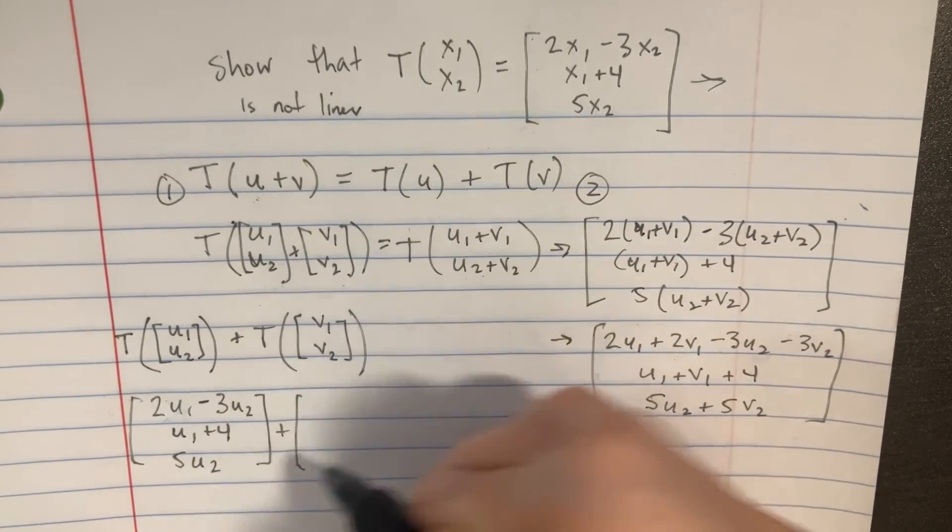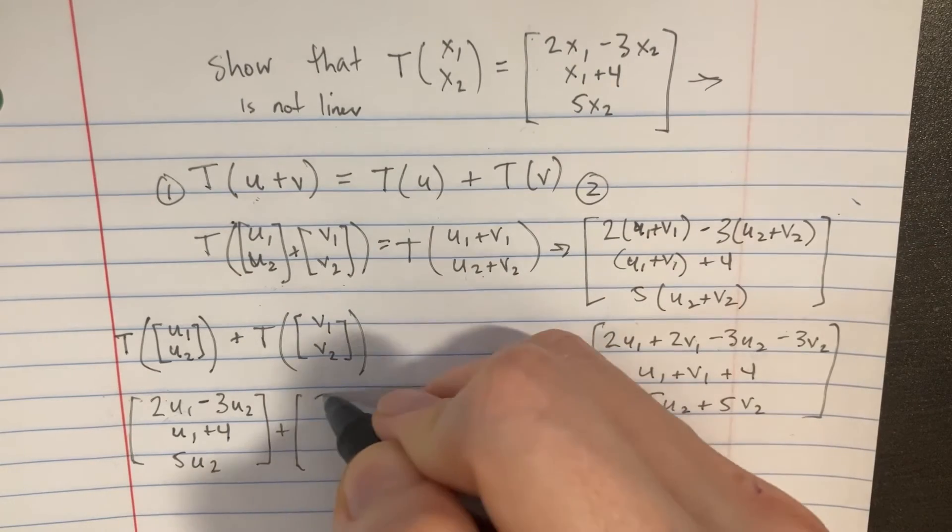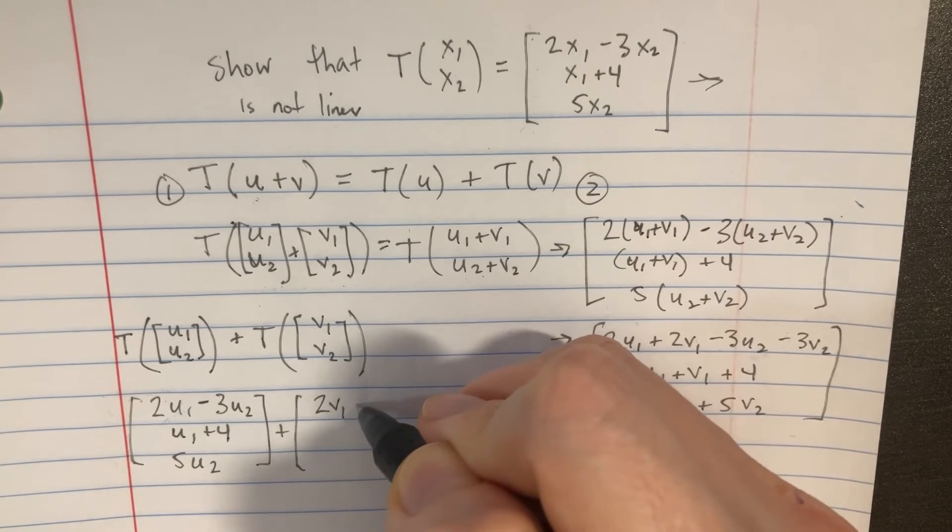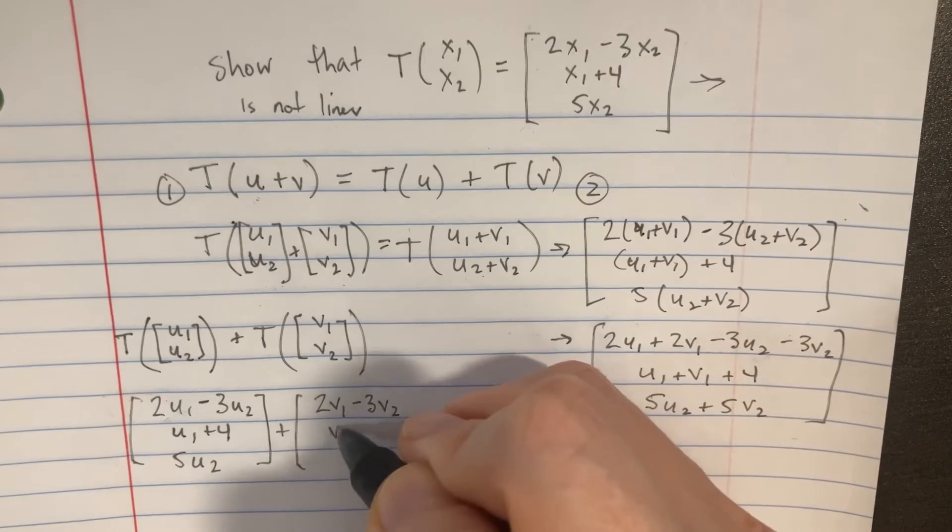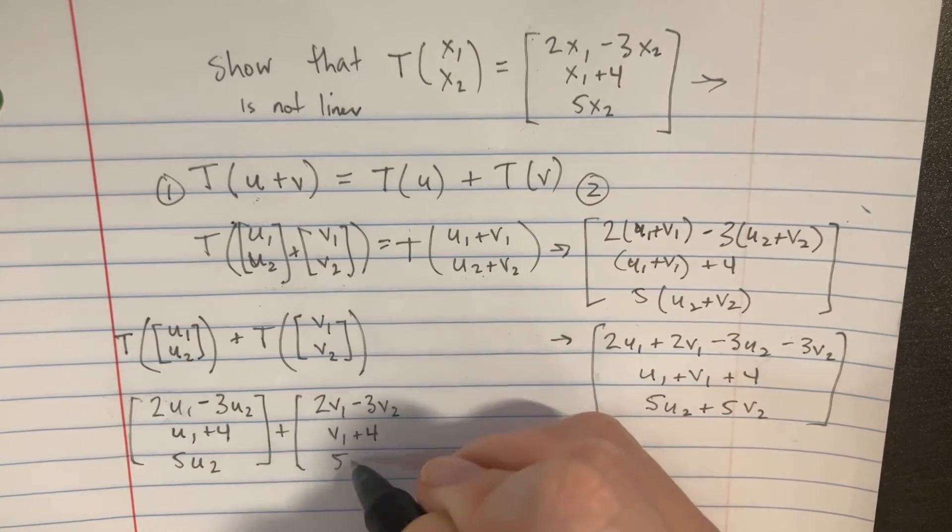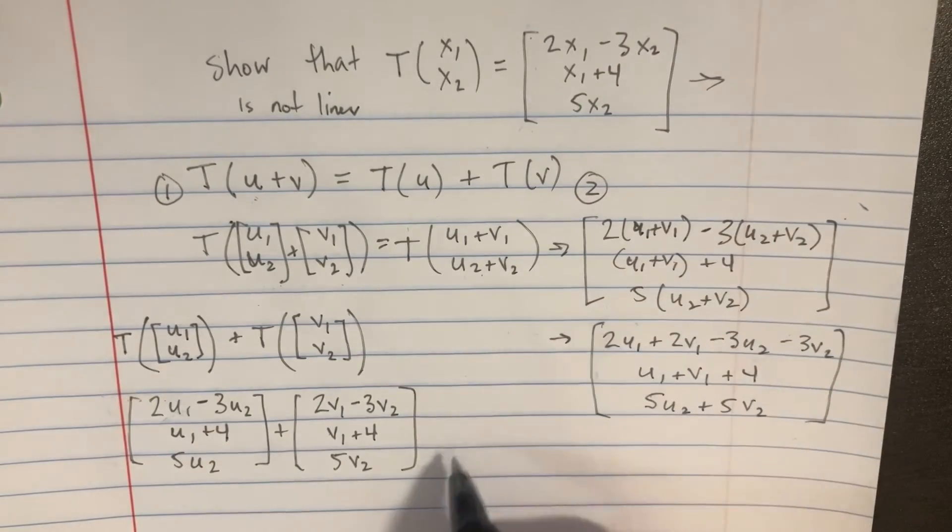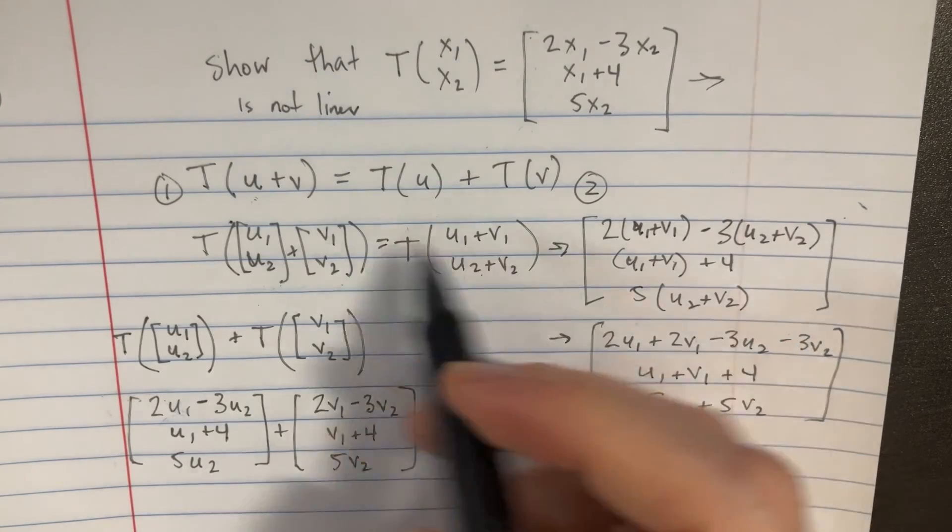We're going to add that to the same thing but with Vs now, so two V1 minus three V2, V1 plus four and five V2. Let's see if that equals the previous one.